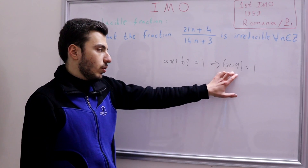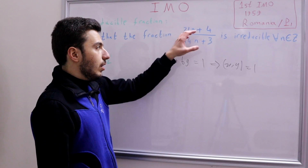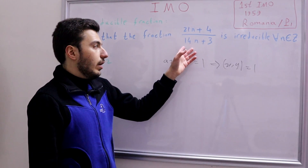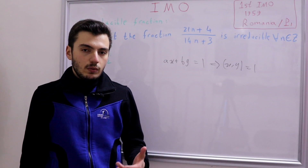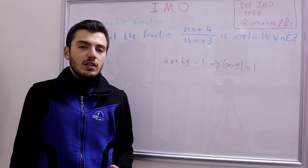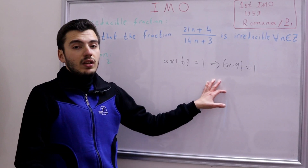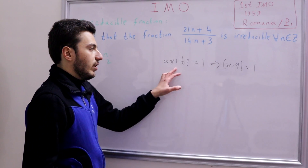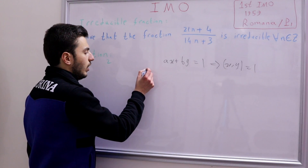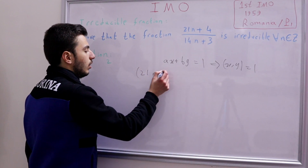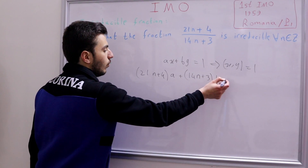We set x and y to be the numerator and denominator respectively. We need to find two integers a and b such that a(21n+4) + b(14n+3) = 1. Instead of guessing, we'll solve algebraically. We rewrite the right side as 0·n + 1 and compare coefficients.